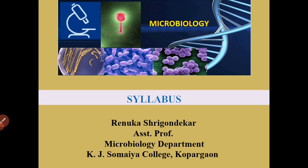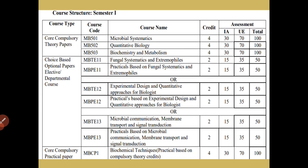Further objectives include inculcating a sense of scientific responsibilities, science and environment awareness, and to help students build up a progressive and successful career in microbiology. Now let's see the syllabus core structure for semester one. We have three core compulsory theory papers: MB501, MB502, and MB503 — which are MB501 Microbial Systematics, MB502 Quantitative Biology, and MB503 Biochemistry and Metabolism.